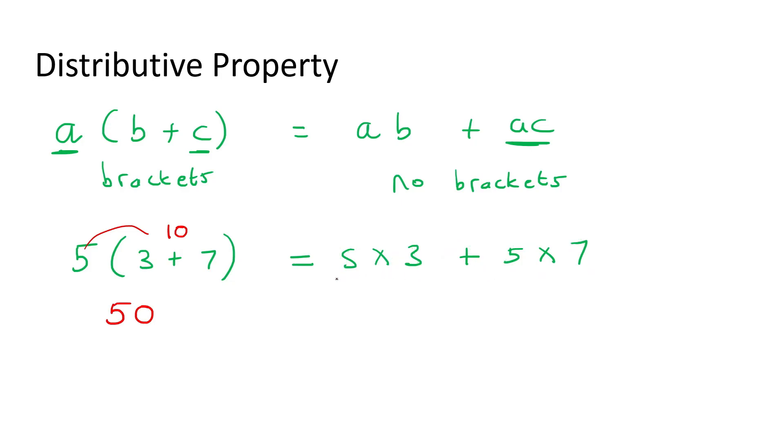Now, let's see what we get if we do it this way. So, what is 5 multiplied by 3? 15. What is 5 multiplied by 7? 35. What is 15 plus 35? 50. So, what they are just telling us with the distributive property is that this can also be calculated like this. And it doesn't matter if we have a plus or a minus.